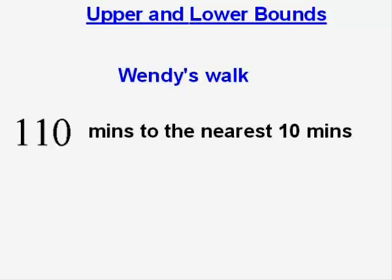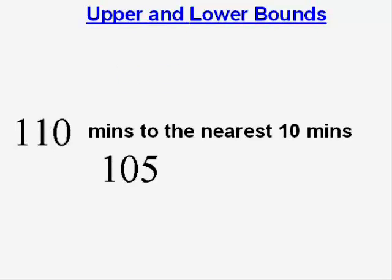Now here, Wendy has gone for a walk and she's measured the time to the nearest ten minutes that her walk took her. And that's 110 minutes. So basically what we need is the half of ten minutes on both sides of that. So we're interested in five minutes on either side. And Wendy's walk could have been as quick as 105 minutes or she might have taken longer and taken as much as 115 minutes. But that's the lower and the upper bound of the time that she took.